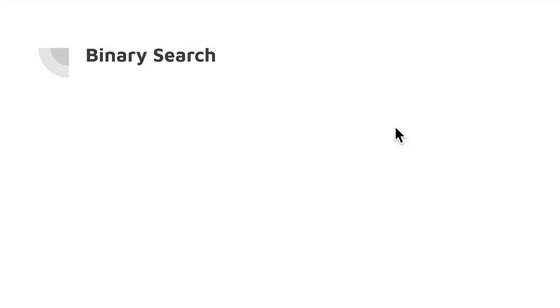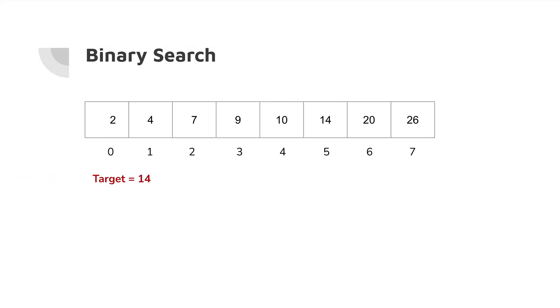Let's see the implementation. Let's take an array. We have an array and suppose we have a target of 14. From this array, we have to identify whether 14 is present or not using binary search. This array is already sorted, so that is the first requirement — if you want to apply binary search, you must have a sorted array. Now what is the next step? First thing we have to do is identify the middle and verify whether our expected number is present at middle or not.